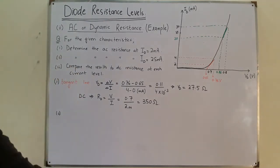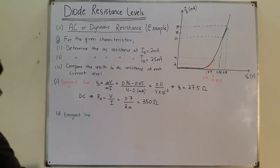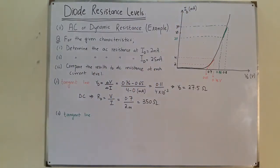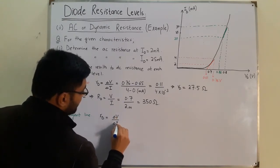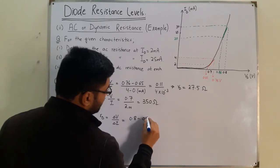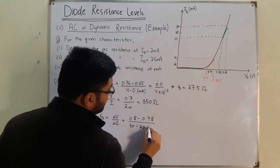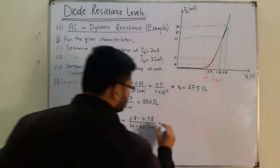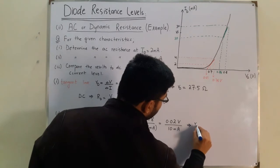The green color represents the tangent line in this case. Wherever you require the resistance, you draw a tangent line and take a maximum and minimum at which you have the values of voltage. The AC resistance is again given by the change of voltage to the change of current: 0.8 minus 0.78 divided by 30 minus 20 milliamperes. That is 0.02 volts divided by 10 milliamperes.